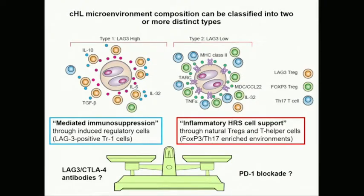We can easily reconstruct the finding that in MHC class II-negative Hodgkin lymphoma, we have rosetting with LAG3-positive cells, whereas in MHC class II-positive cases, we have an abundance of FOXP3. Recalling the mutually exclusive pattern — either LAG3-high or FOXP3-high — this is also spatially resolved, with no LAG3 cells in the vicinity in MHC class II-positive cases, but mostly FOXP3. We can quantify this by measuring nearest neighbors.